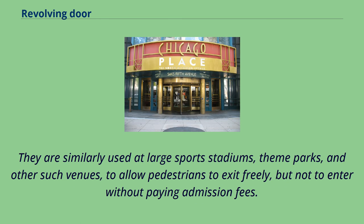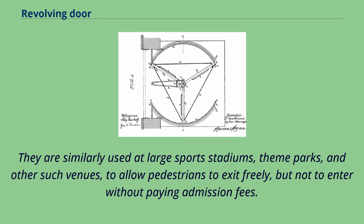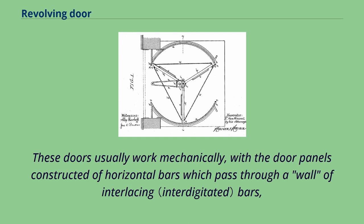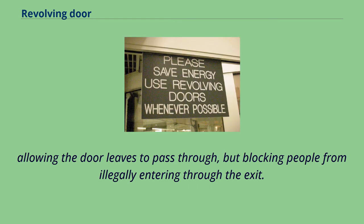They are similarly used at large sports stadiums, theme parks, and other such venues, to allow pedestrians to exit freely but not to enter without paying admission fees. These doors usually work mechanically, with the door panels constructed of horizontal bars which pass through a wall of interlacing bars, allowing the door leaves to pass through but blocking people from illegally entering through the exit.